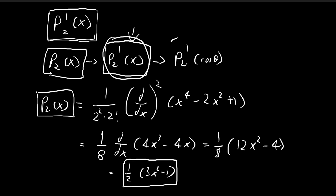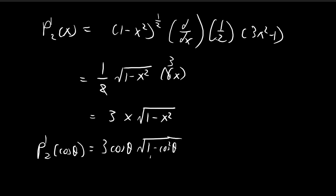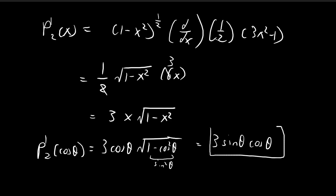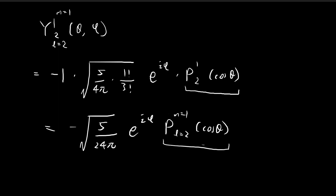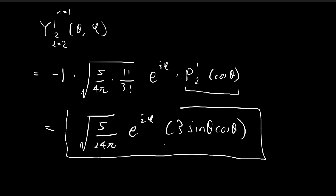Substituting x = cosθ, we get P₂¹(cosθ) = 3cosθ × √(1 − cos²θ). Since 1 − cos²θ = sin²θ, taking the square root gives sinθ. Therefore P₂¹(cosθ) = 3sinθ cosθ. We have now found this expression and are ready to substitute back.